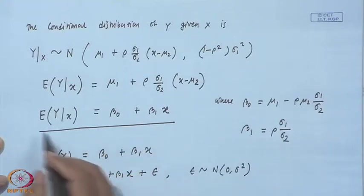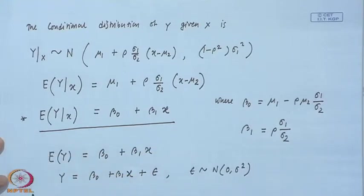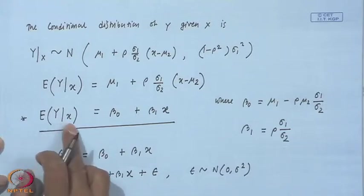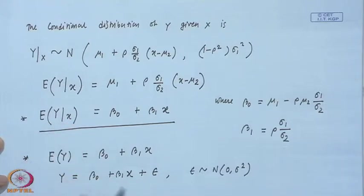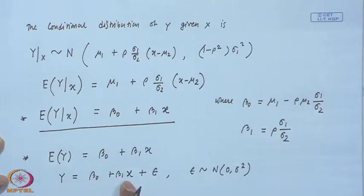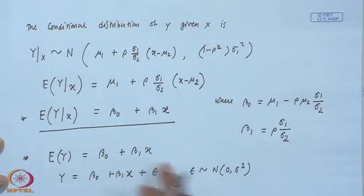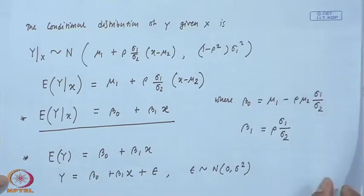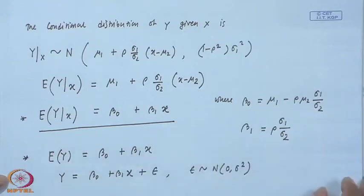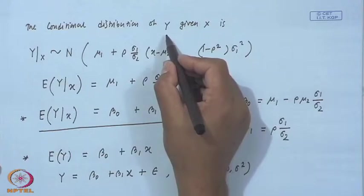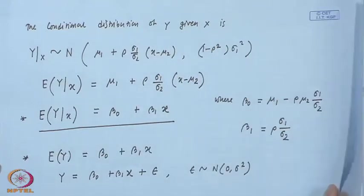This is the key difference. When both x and y are random variables this is the model to consider, whereas when y is a random variable but x is not — which is the situation in almost all cases — x is a controlled variable. Now, how to fit this model when both x and y are random variables? From the joint distribution we know the conditional distribution of y given x.